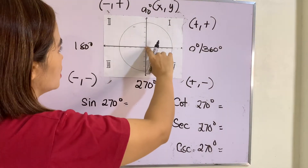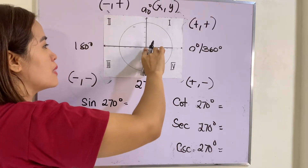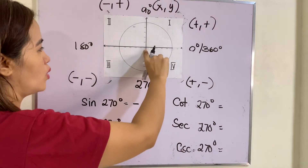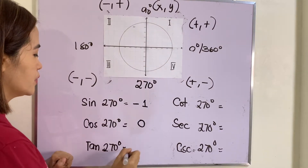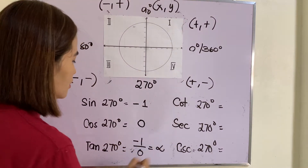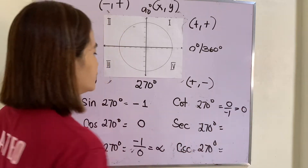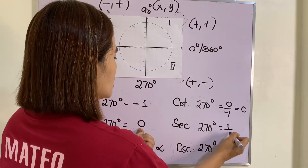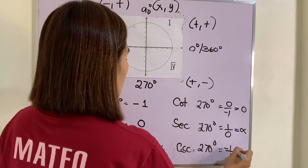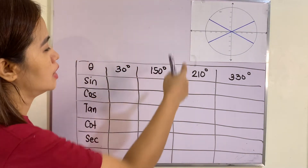For 270 degrees: this angle is between quadrant three and quadrant four, and the length along the y-axis is negative one — represented by the sine function — so sine of 270 equals negative one. There is no x at this angle, so cosine of 270 equals zero. Tangent is negative one over zero, which is undefined. Cotangent is zero over negative one, which equals zero. Secant is one over zero, which is undefined. And cosecant, the reciprocal of negative one, is negative one.